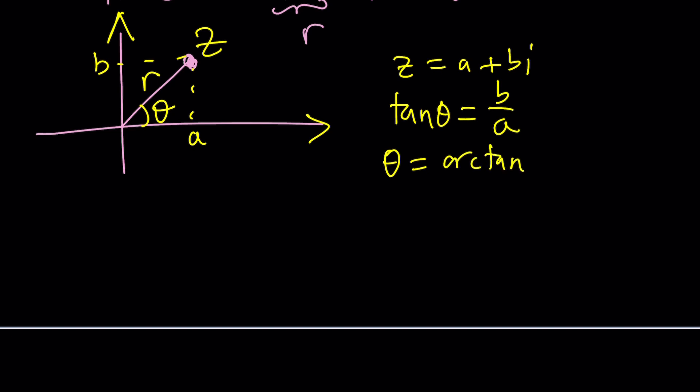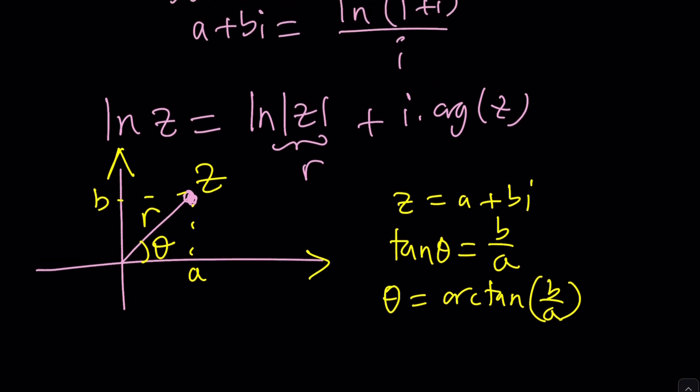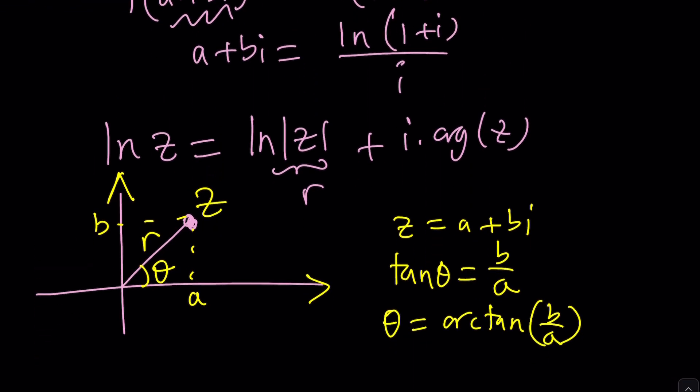theta can be written as arctan b over a. Why do I say sometimes? Because if theta is not in the first quadrant, then you have to adjust for the result that comes from arctan. So you've got to be very careful with these things, but that's the general idea. And hopefully you can apply it to this scenario.